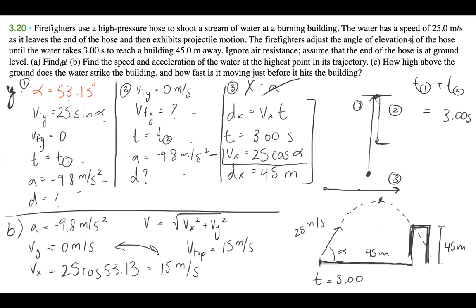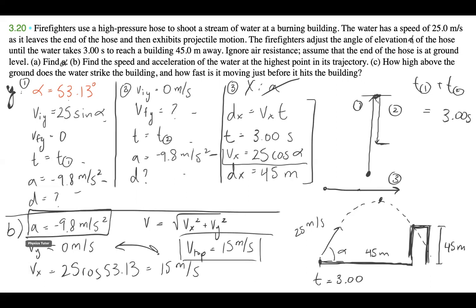We can use V equals sqrt(Vx² + Vy²), but since Vy is zero at the top, V at the top is just 15 meters per second. So for Part B: acceleration is negative 9.8 meters per second squared, and speed at the top is 15 meters per second.